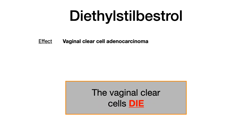Diethylstilbestrol, also known as DES — a brief history: this was a medication prescribed in the 1940s up until the early 70s. We used to think it would prevent miscarriage or preterm labor. Then we started to see it was associated with vaginal clear cell adenocarcinoma, and that is the teratogenic toxic effect of this medication. My mnemonic: the vaginal clear cells die — 'die' for diethylstilbestrol.